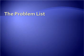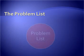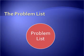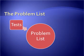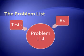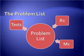Everything we do to the patient as doctors should relate to some item on the problem list. All investigations should be done to clarify or better manage something on the problem list. Every drug prescribed should relate to a condition on the problem list. If this is not the case, we are either mismanaging the patient or do not have a complete problem list. The problem list is the most important aspect of your patient record.